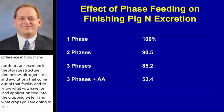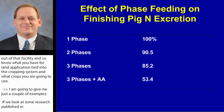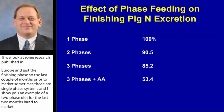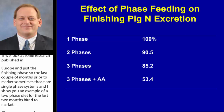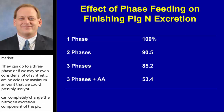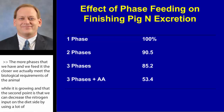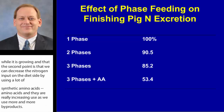Looking at some research published out of Europe on just the finishing phase — the last couple of months prior to market — sometimes those are single-phase systems. I showed you an example of a two-phase diet for those last two months. Going to a three-phase, or even using the maximum amount of synthetic amino acids, you can completely change the nitrogen excretion component of the pig. The more phases we feed, the closer we actually meet the biological requirement of the animal while it's growing. Synthetic amino acids can decrease the nitrogen input on the diet side, and their use has really increased with more byproducts in swine diet formulations in the last five to six years.